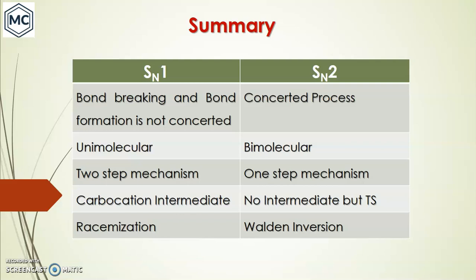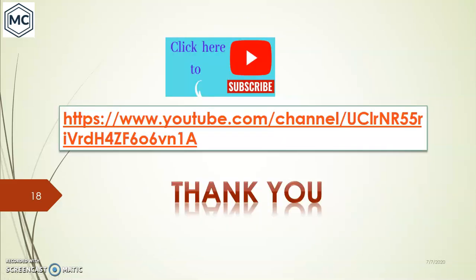In summary, the differences between SN1 and SN2: In SN1 bond breaking and bond formation are not concerted; in SN2 it is a concerted reaction. SN1 is unimolecular; SN2 is bimolecular. SN1 is a two-step mechanism; SN2 is one step. SN1 involves a carbocation intermediate; SN2 has no intermediate, only a transition state. SN1 gives racemization; SN2 gives Walden inversion.